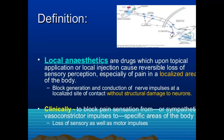Local anesthetics produce their effect by blocking the generation and conduction of nerve impulses at the localized site of contact, without structural damage to the neurons.